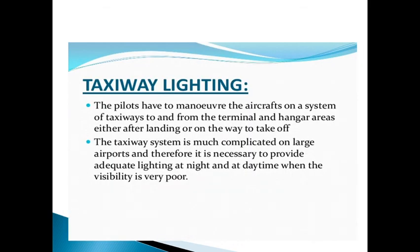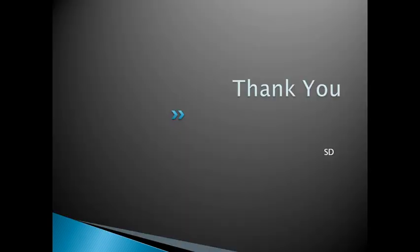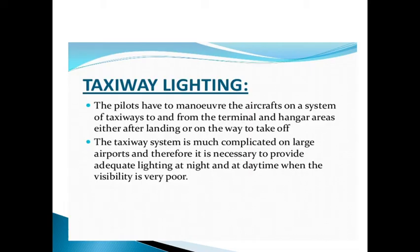The final component is taxiway lighting. Taxiways are the roads leading from the runway to the terminal, to the hangar, and to different parts of the airport. This portion is also lighted so that when the aircraft moves from the runway to different components — such as the terminal building or hangar — there is no mistake made during nighttime operations. These areas are all marked and lighted properly, which is what taxiway lighting refers to.